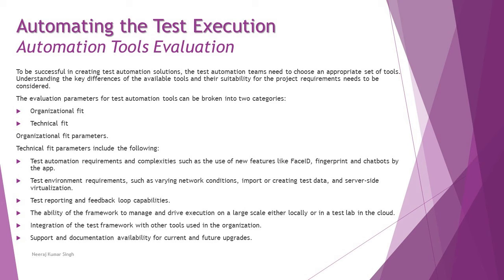Test reporting and feedback loop capabilities are also important — specifically, the ability of the framework to manage and drive execution on a large scale, either locally or in a cloud-based test lab. You need to know whether the tool can report statistics on whether execution passed or failed, and if it failed, what the reason was — whether it was the application or the test data. How detailed the reporting can be is key. Additionally, can the tool accommodate data-driven testing, keyword-driven testing, and other framework approaches?